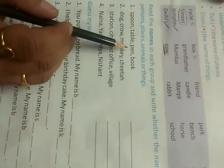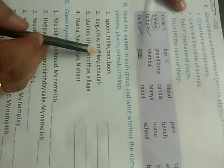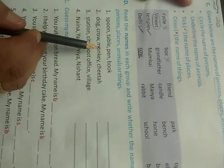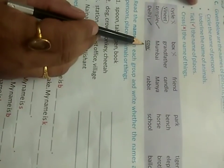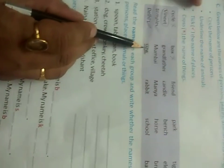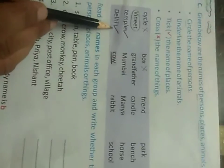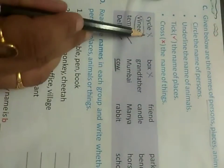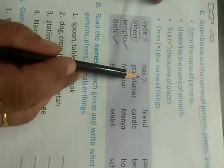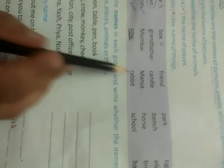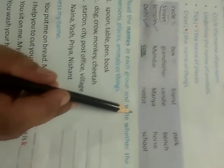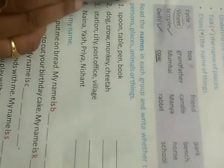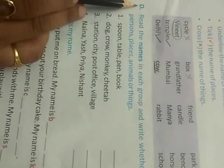You will do accordingly. Circle the name of persons, underline the name of animals, tick the name of places, and cross the name of things. These words you will do yourself. Now the next: Part D.